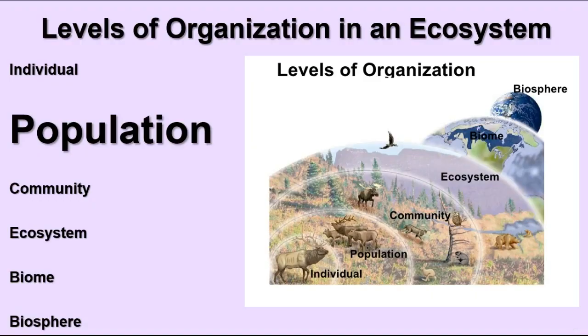Ecology talks about how things are organized within the ecosystem, which is part of the biosphere — the entire surface of Earth that living things can live in. We talk about individuals, but we talk about groups of individuals which are populations. We talk about communities, which are different populations interacting together. Ecosystems involve how they interact with their environment. Biomes have to do with particular climate, geographic, and geological processes, and then all of that together makes up our entire biosphere, which is planet Earth.